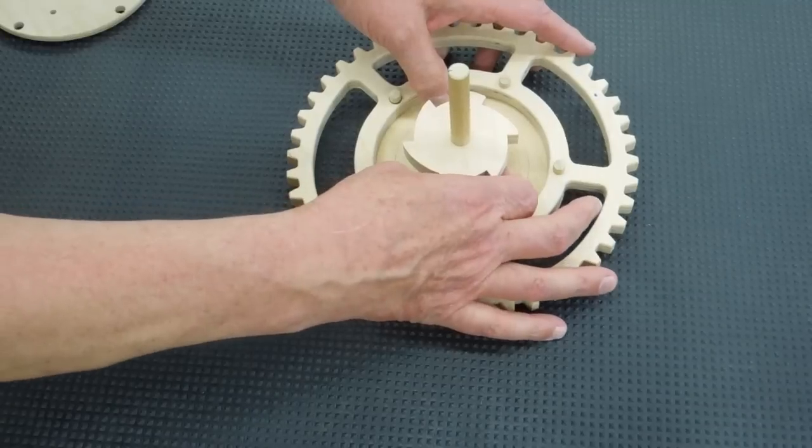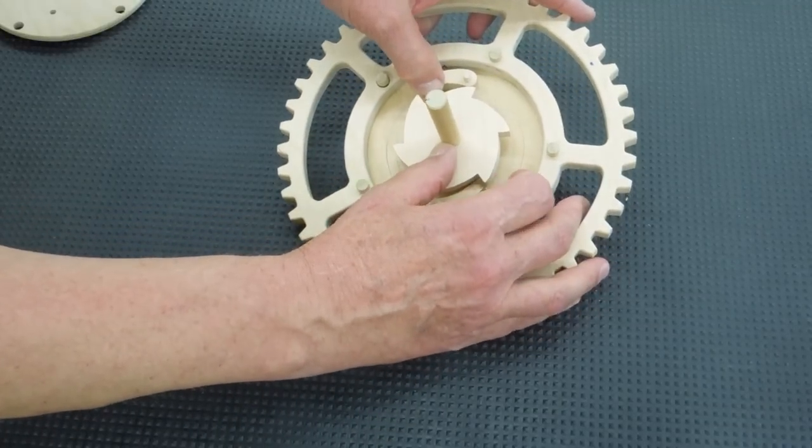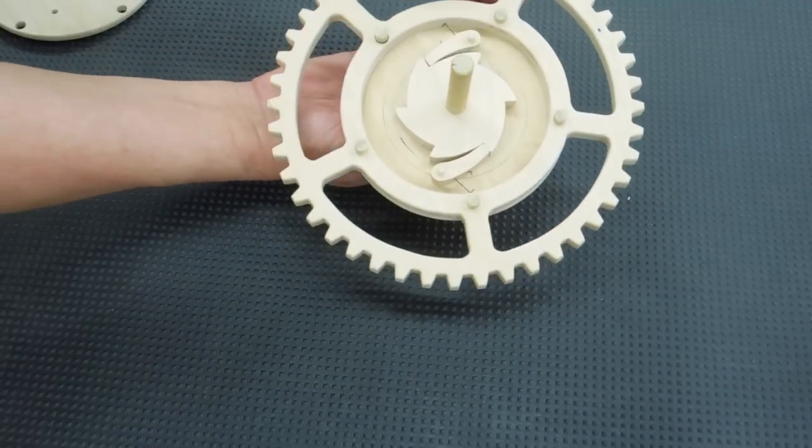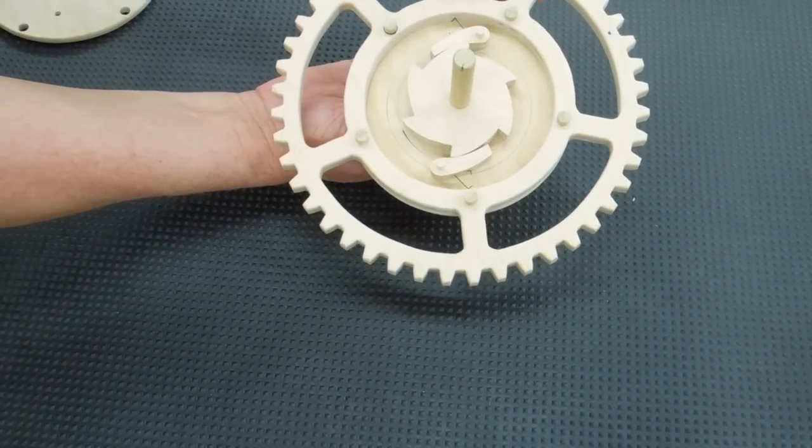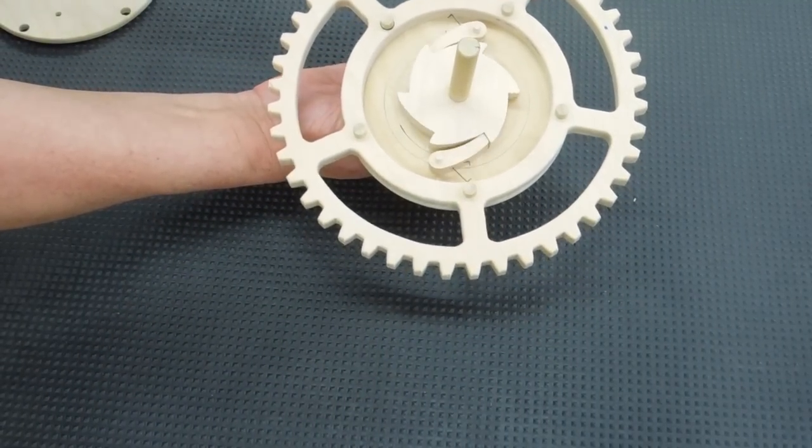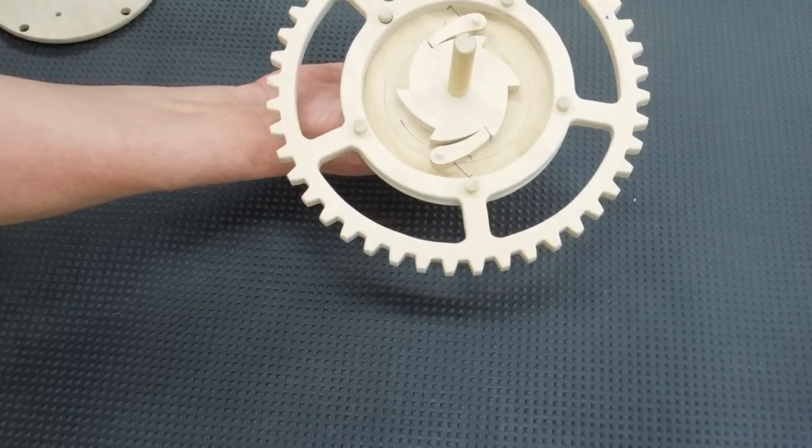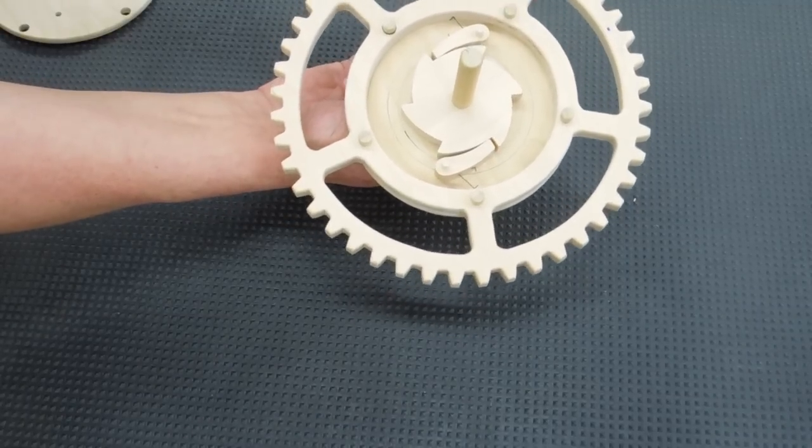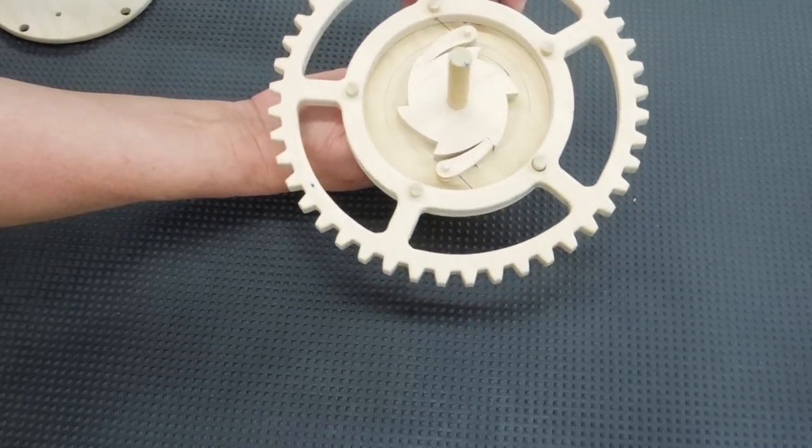And when you put this in, you need three hands. That will engage. That allows the ratchet to turn freely in this direction and then when it engages it will turn this way.